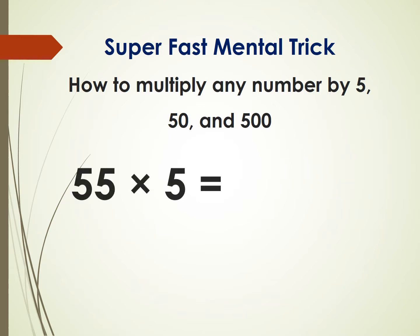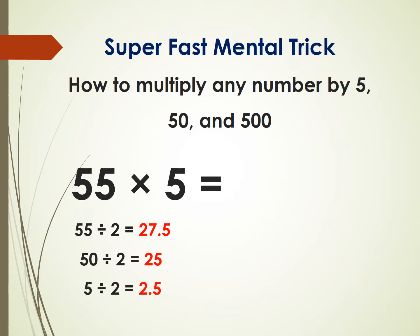Another example: 55 times 5. 55 is not divisible by 2. If you divide it by 2 you get 27.5. The way that we do it is: divide 50 by 2, you get 25, and then 5 divided by 2 is 2.5. Add them up, you get 27.5. To get the answer, just ignore the decimal point, so the answer is 275.